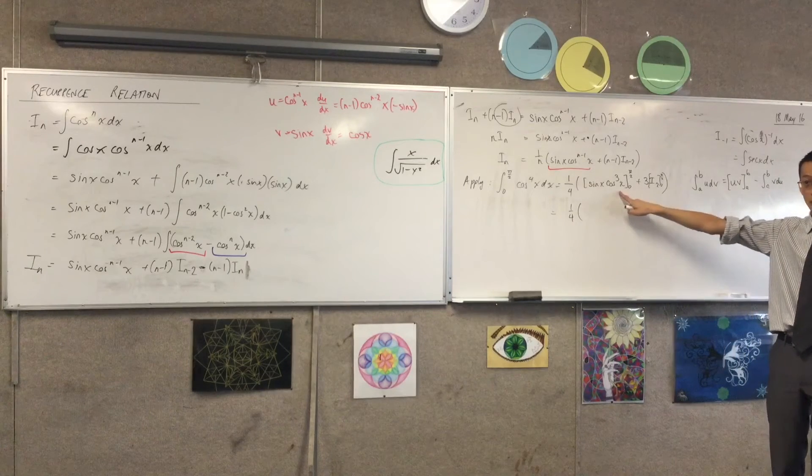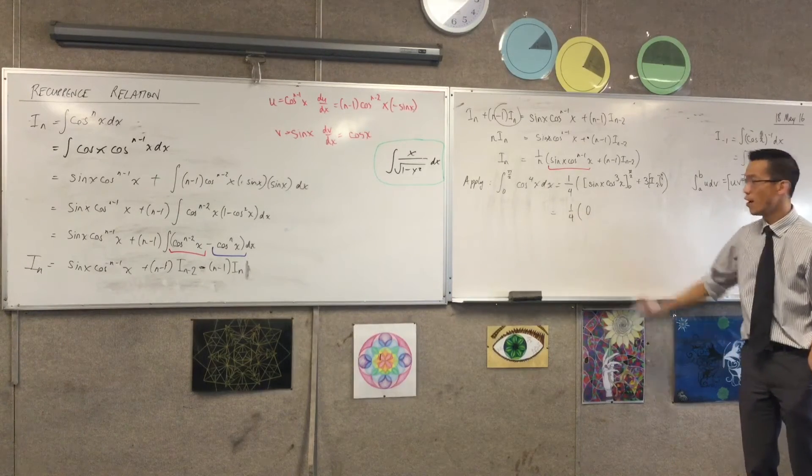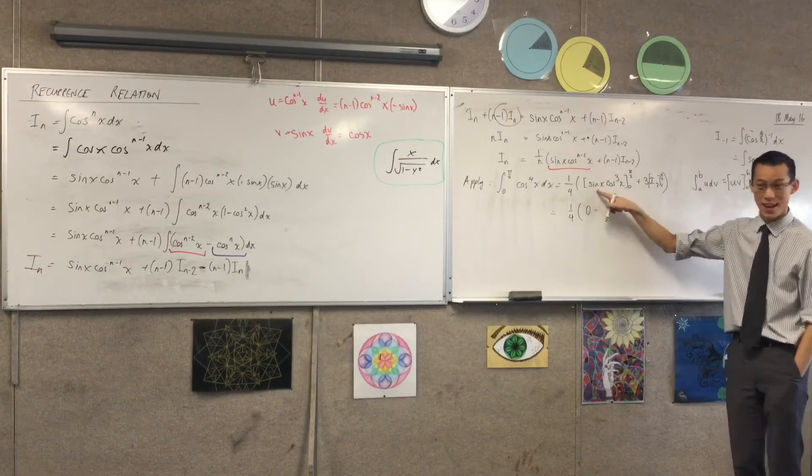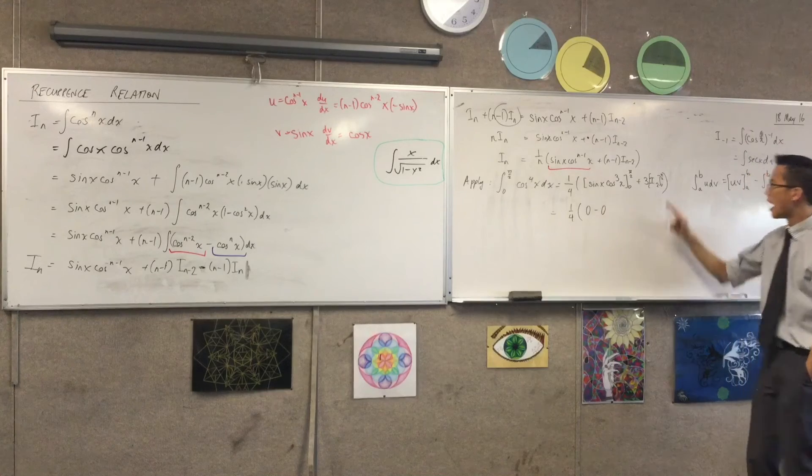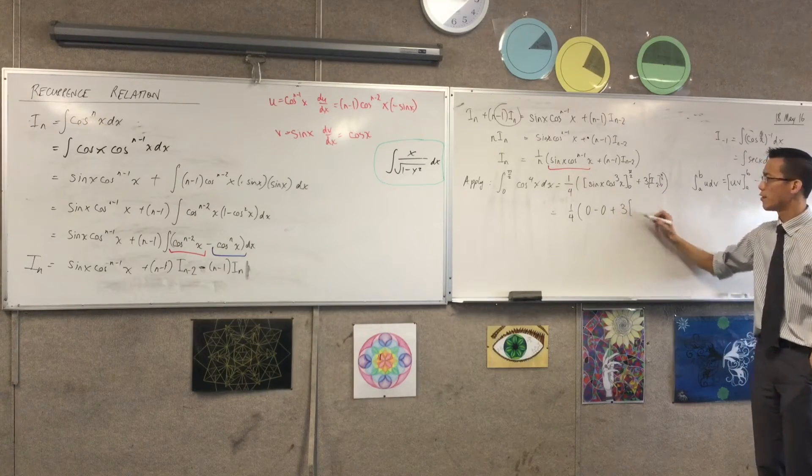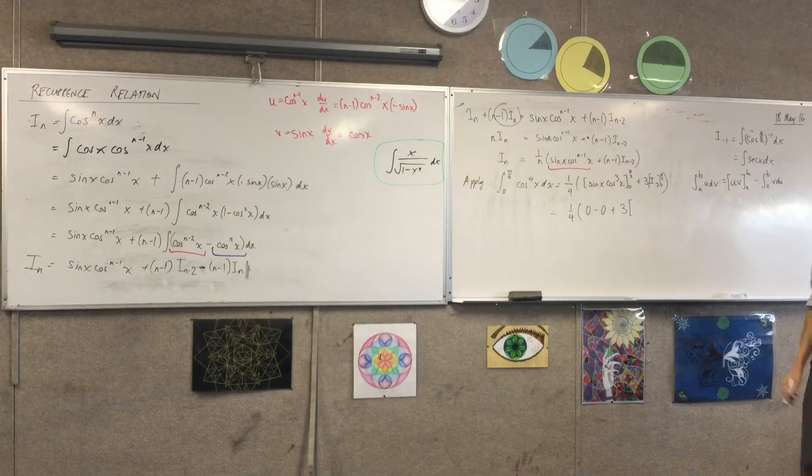Because of this cosine term here, right, that's just going to become 0. When I evaluate it at 0, you still get 0 because of the sine term, right? How convenient. What happens over here, I've got 3 lots of what?